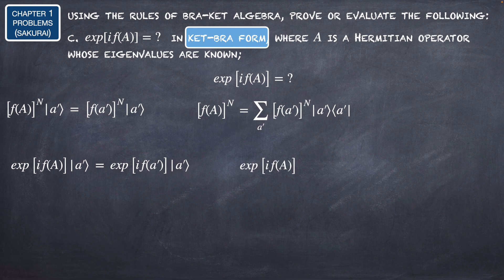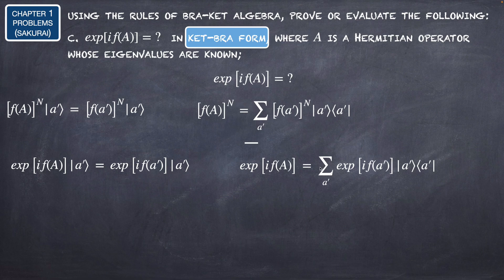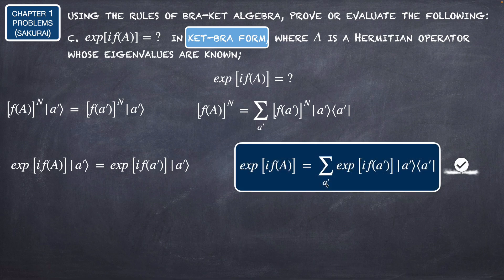So the ket-bra form of the operator exp(iF(A)) is the summation over a' of the eigenvalue exp(iF(a')) multiplied by the projection operator |a'⟩⟨a'|.